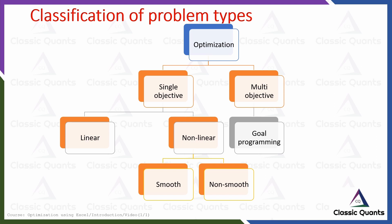Looking at the classification of optimization problems, there are basically two main classifications: single objective and multi-objective. Single objective means we have only one objective in mind. Multi-objective means you may have more than one objective, each having some specific priorities, or the priorities may be equal. Under single objective, you can have linear or nonlinear objectives and constraints, which define the nature of the problem — we call them linear programs or nonlinear programs.